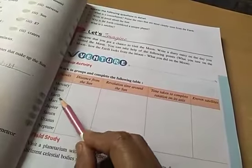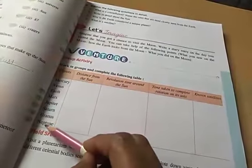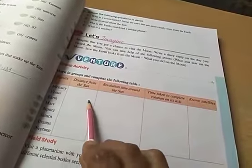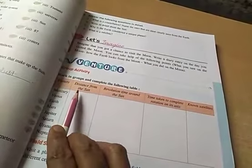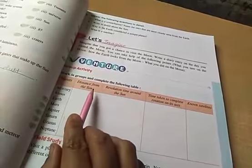There are some planets: Mercury, Venus, Earth, Mars, Jupiter, Saturn, Uranus, Neptune. You have to complete this table accordingly. You can search through Google or the internet.